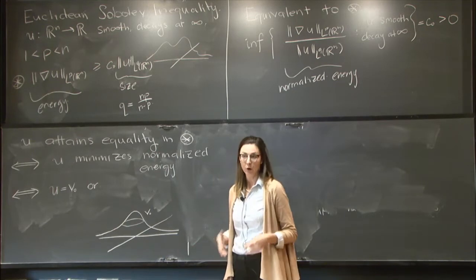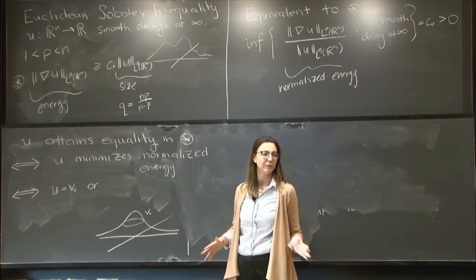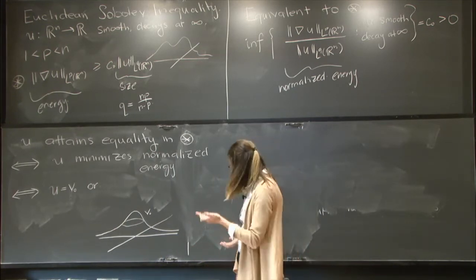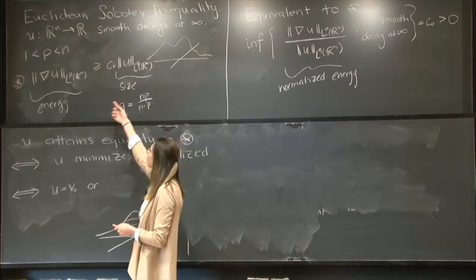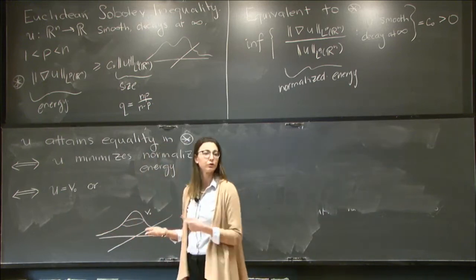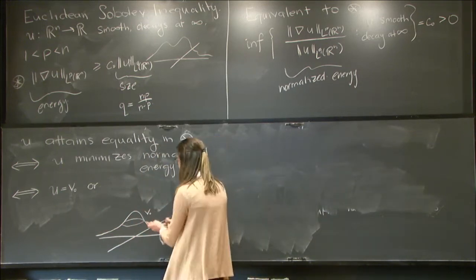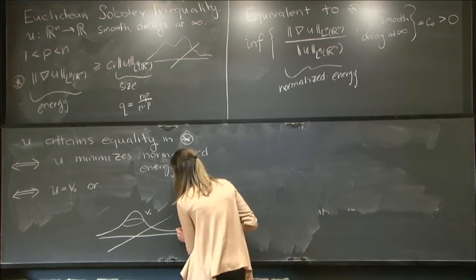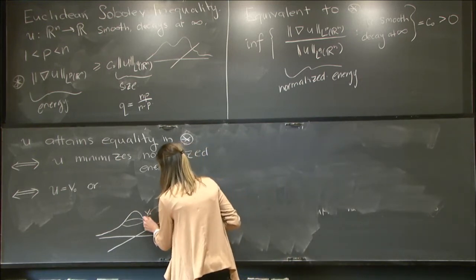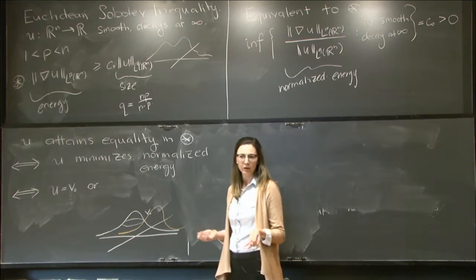we immediately have a few other equality cases that come from the symmetries of this inequality. For one, both of the norms that I've placed here are invariant under translations. So immediately if I know that v0 attains equality, then if I translate this profile, I have another equality case.